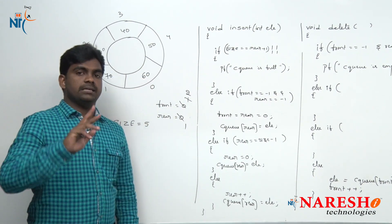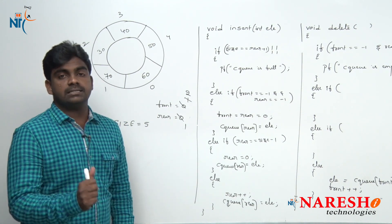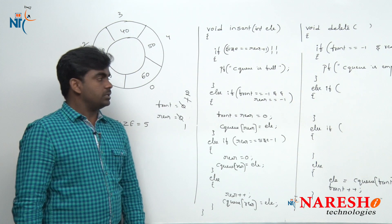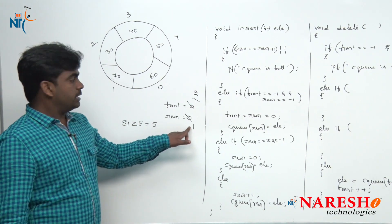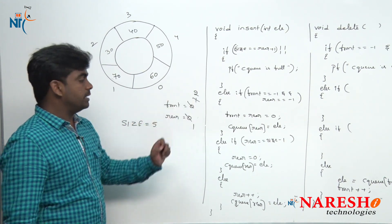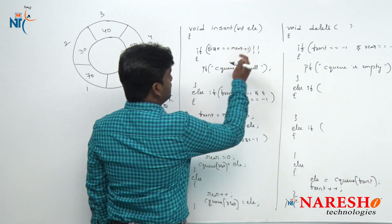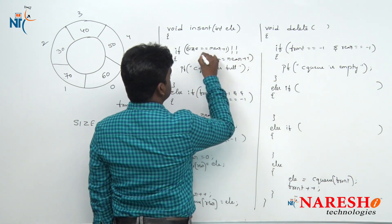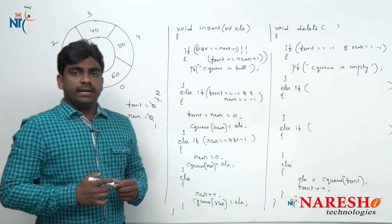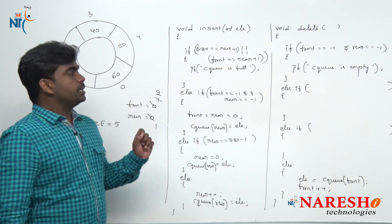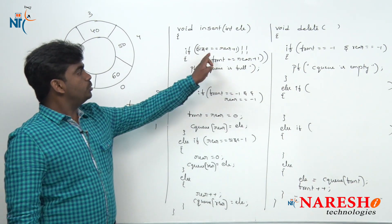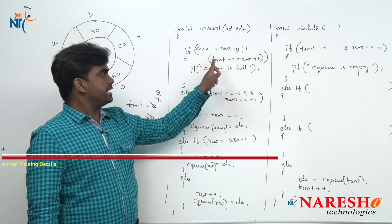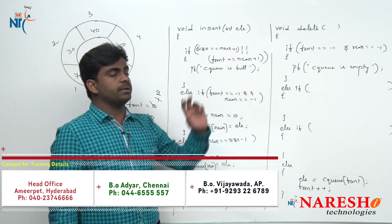So one more condition we need to check to determine whether the queue is full or not. Rear value is 1 and front value is 2, so front equals rear plus 1 is another condition. To check if a circular queue is full, two conditions are needed: first, size equals rear plus 1; second, front equals rear plus 1.